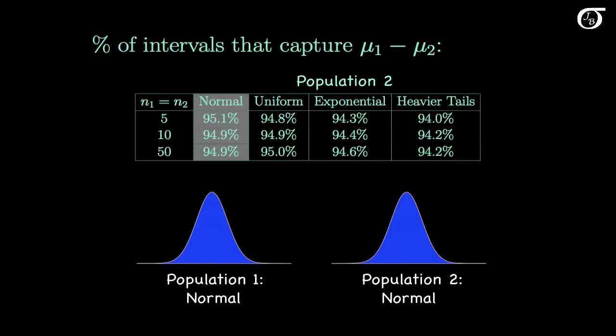First, note that the difference x1-bar minus x2-bar — the difference in sample means — is an unbiased estimator of the difference in population means in every one of these situations. On average the difference in sample means equals the difference in population means for all of these distributions. It's just that the margin of error isn't quite right for non-normal populations.